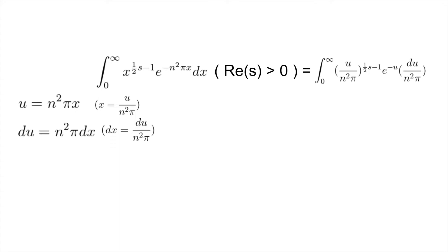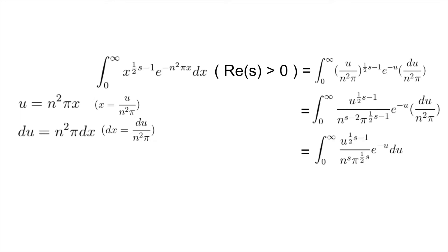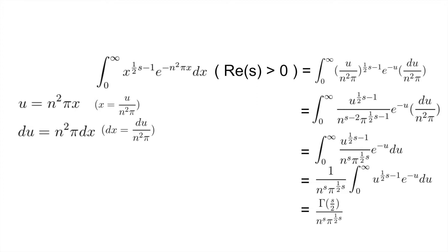We expand to get u to the power of 1 half s minus 1 over n to the power of s minus 2 times pi to the power of 1 half s minus 1, times e to the negative u du over n squared pi. Combining the n's and pi's gives the integral of u to the power of 1 half s minus 1 over n to the power of s times pi to the power of 1 half s, times e to the negative u du. Moving the constant outside, the remaining integral is gamma of s over 2 by definition. So the final answer is gamma of s over 2 divided by n to the power of s times pi to the power of s over 2.